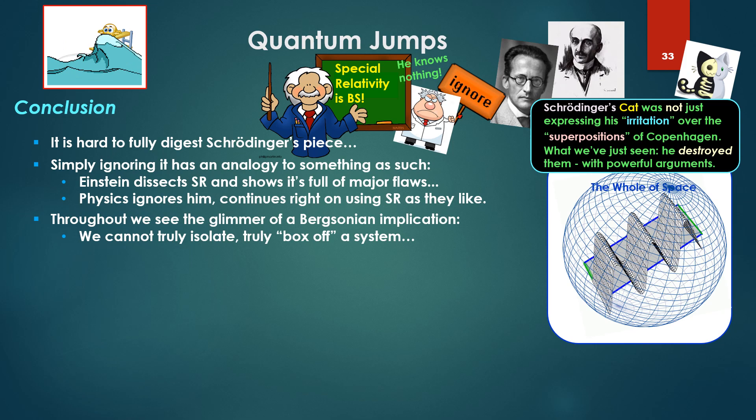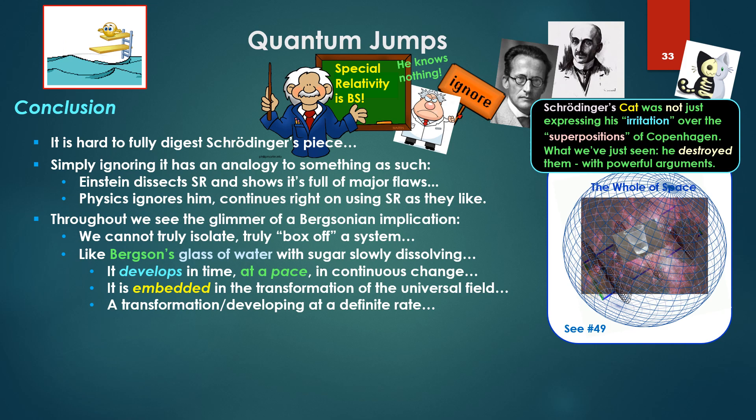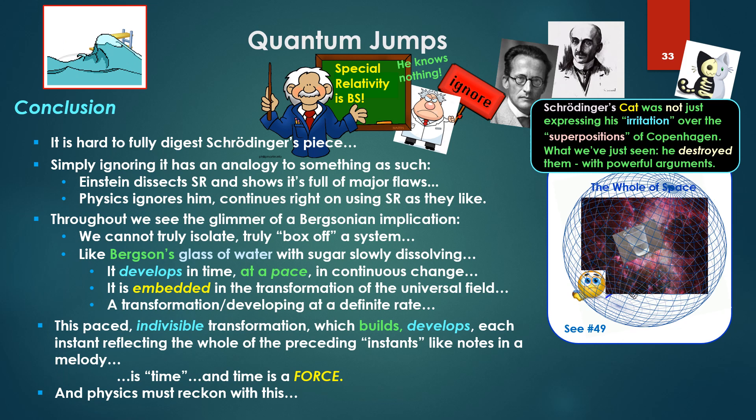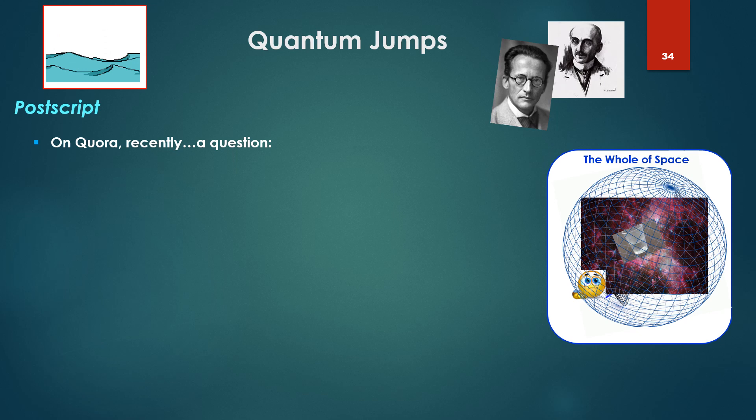Throughout, we've seen the glimmer of a Bergsonian implication. That is, we cannot truly isolate, truly box off a system. Like Bergson's glass of water, with sugar slowly dissolving, the dissolving develops in time, at a pace, the continuous change. For that glass and the dissolution is embedded in the transformation of the universal field, and this is a transformation developing at a definite rate. And this pace, indivisible transformation, not a series of states, which builds, develops, each instance so-called, reflecting the whole of the preceding instance, like notes to the melody, is time, and time is a force, and physics must reckon with this.